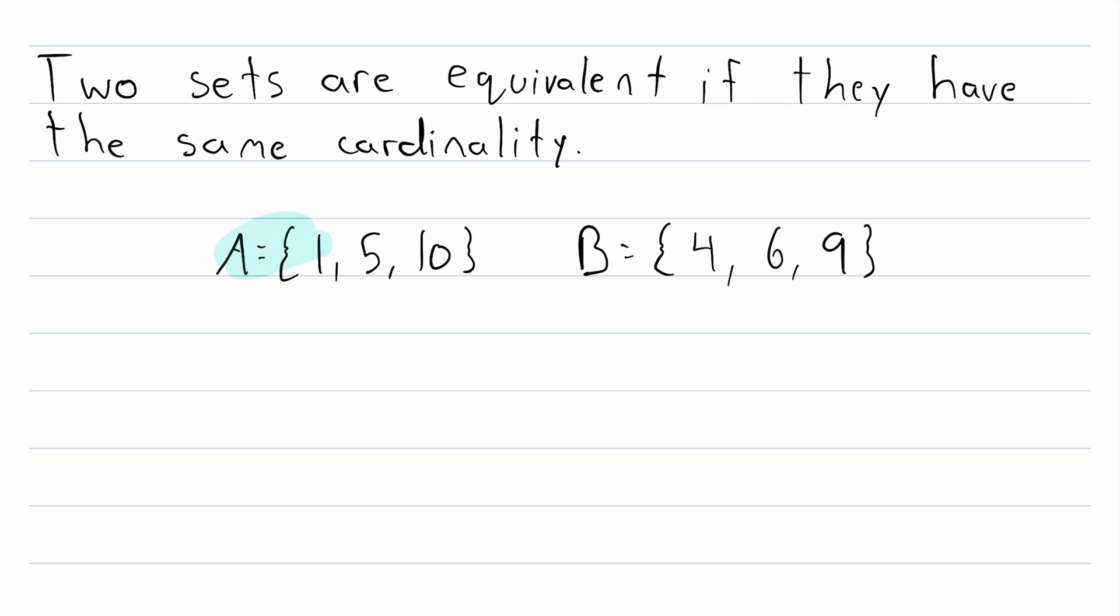So here's an example. The sets A and B are clearly not equal sets. They don't have the same exact elements. However, the cardinality of A is three because A has three elements. Also, the cardinality of B is three. So we can say the set A is equivalent to B, which is written like this.